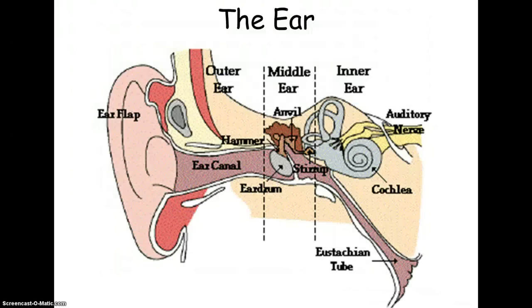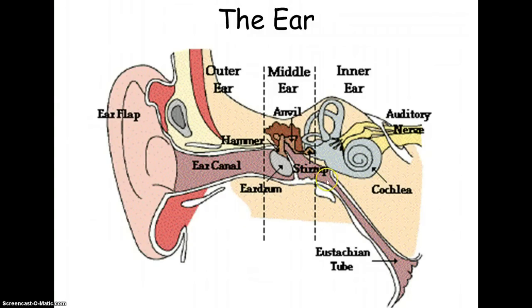Here's a visual — ear flap, outer ear, then we have the canal. Here we would call this the middle ear, and you need to remember eardrum, anvil, stirrup, and their functions. And then we've got the inner ear. This right here, the Eustachian tube — when there are ear infections, this is the area that is blocked. This is where drainage occurs.